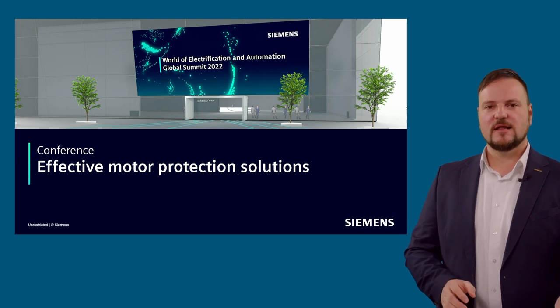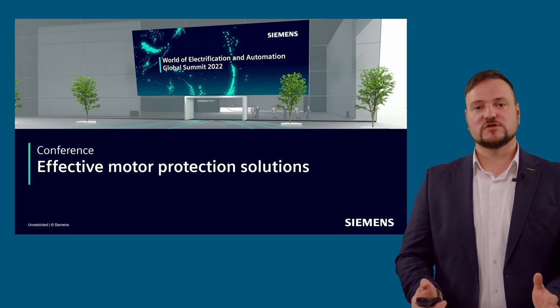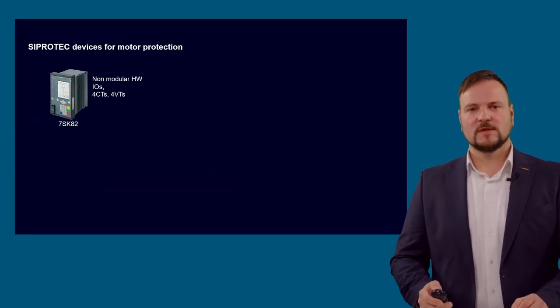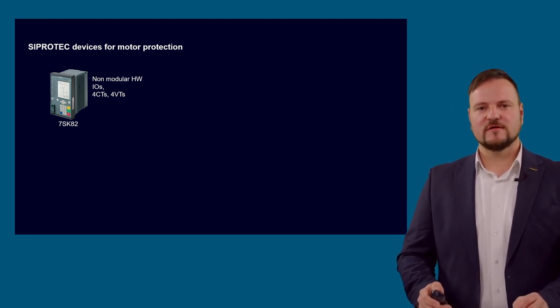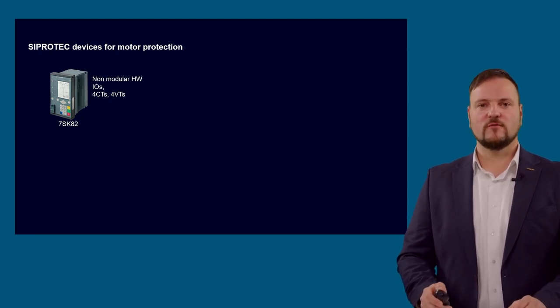Before we go into details, let me present our SIPROTEC 5 devices which provide motor protection for you. The smallest of our classical devices is the 7SK82 device which contains all necessary basic functions for protection of inductive motor or asynchronous motors. For the non-modular series, the hardware setup is limited to 4 CT sets and 4 VT sets, so that differential protection is unfortunately not possible with this device.